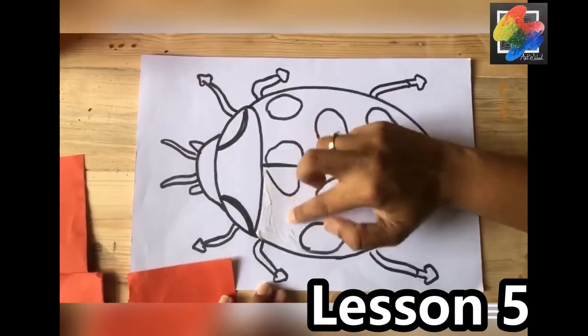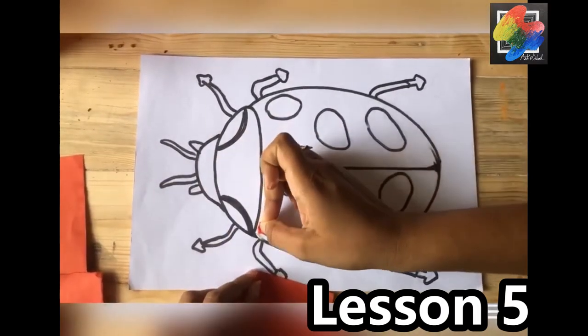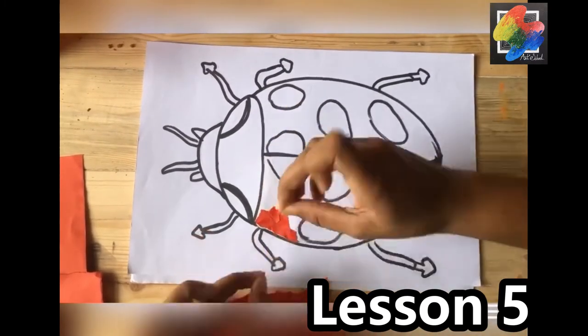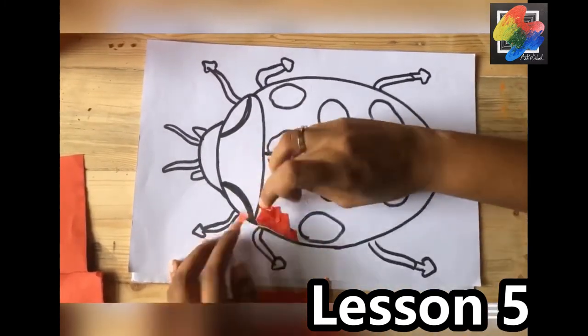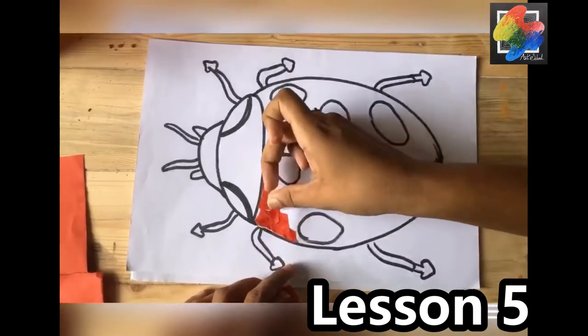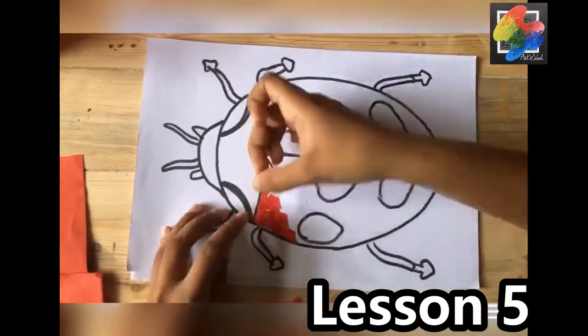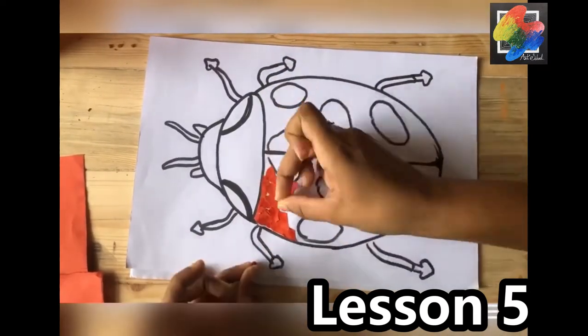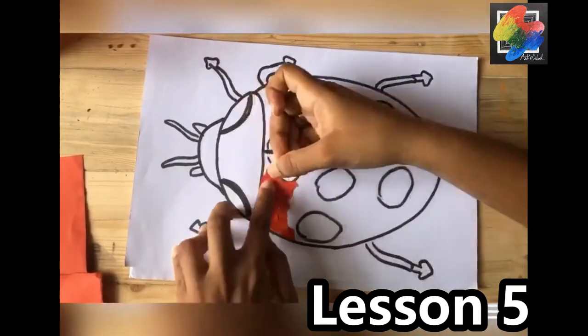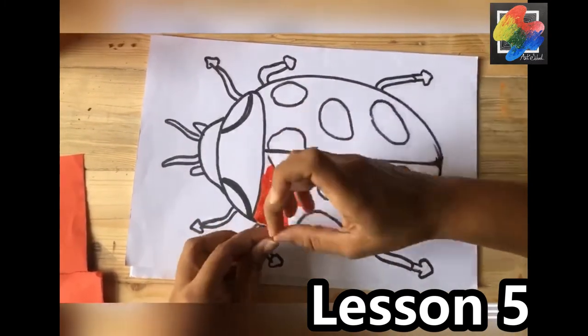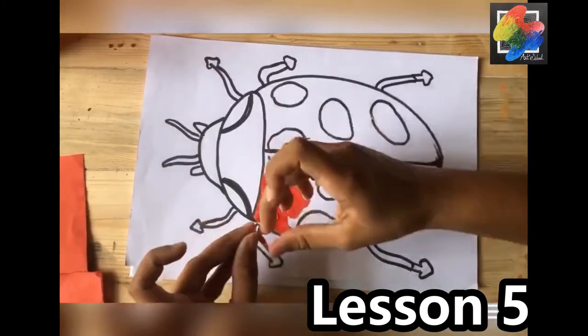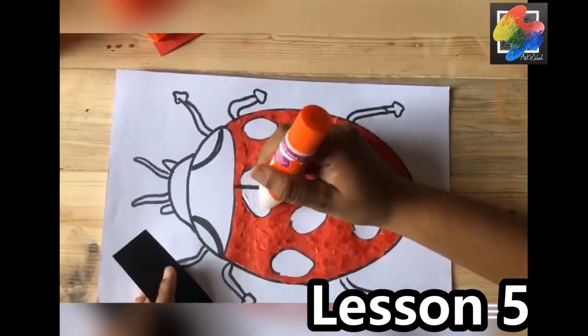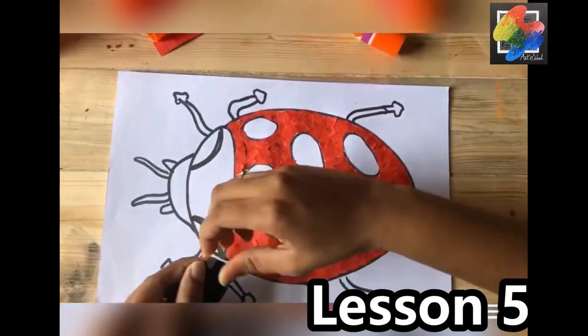Apply some glue and spread it using your finger. Tear the paper into small pieces and paste it patiently and neatly. Try to do it without leaving blanks. Now I'm going to cover the black marks. Follow the same method.